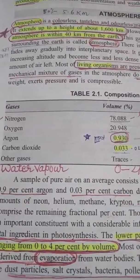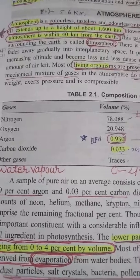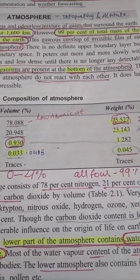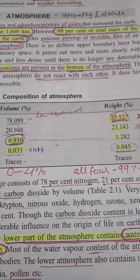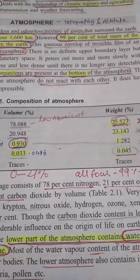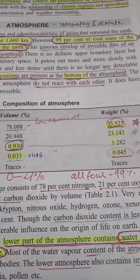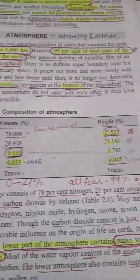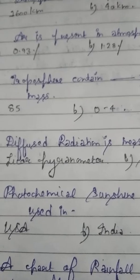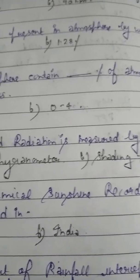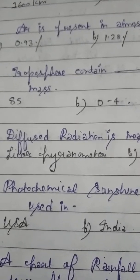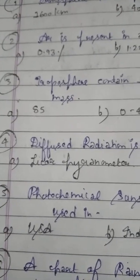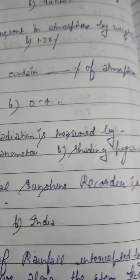Atmosphere extends up to the height of? This portion is from meteorology — you have to tell at what height the atmosphere extends. Option A: 1600 kilometers. Option B: 40 kilometers. Please remember one fact: 99% of the total mass of the atmosphere is confined to 40 kilometers only. But the atmosphere extends to 1600 kilometers. So the correct answer is 1600 kilometers.